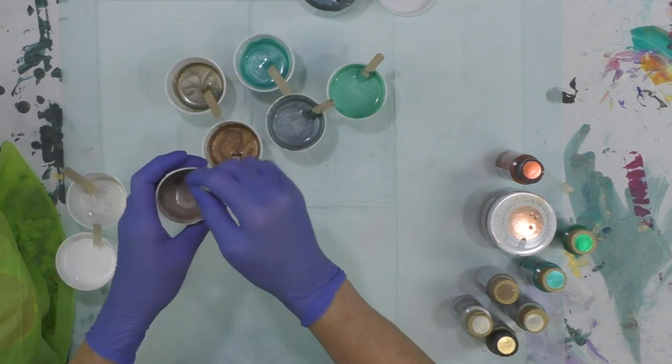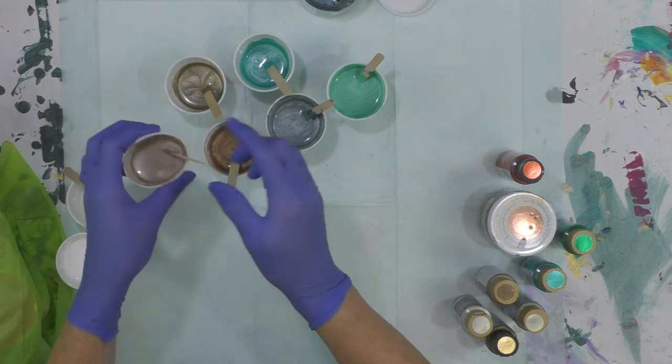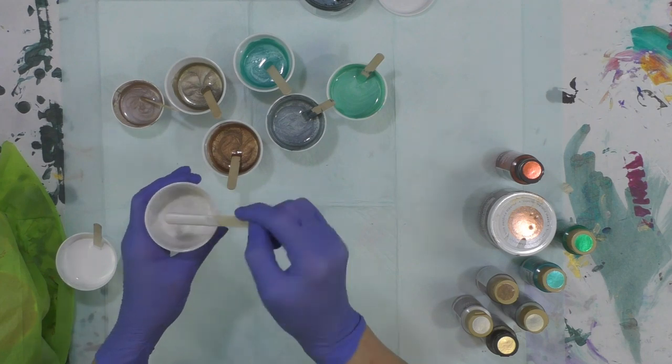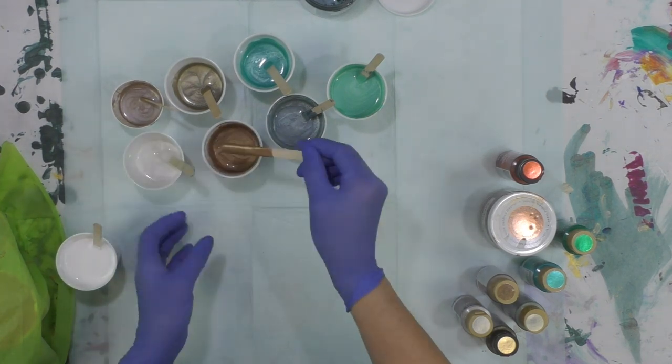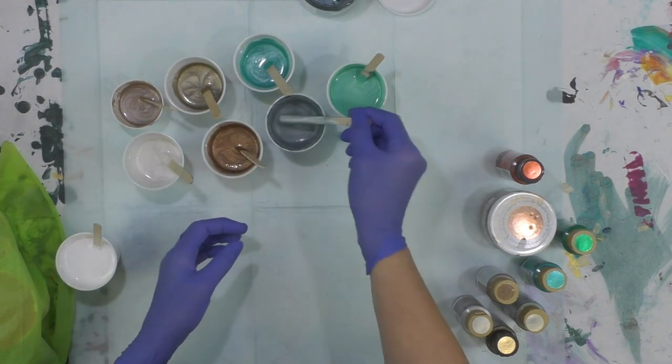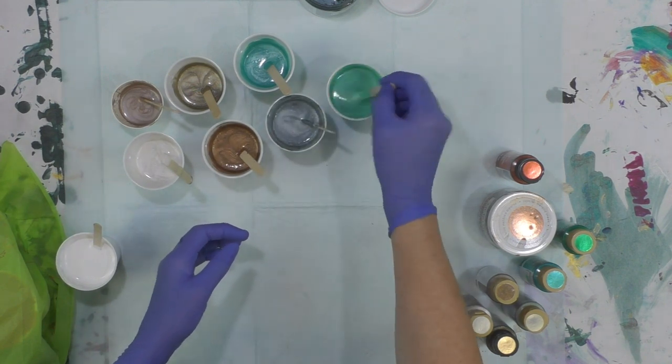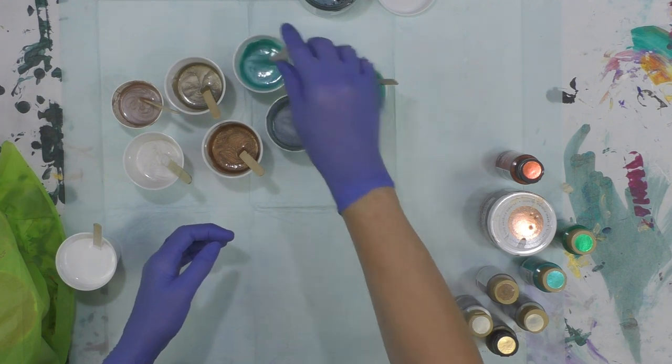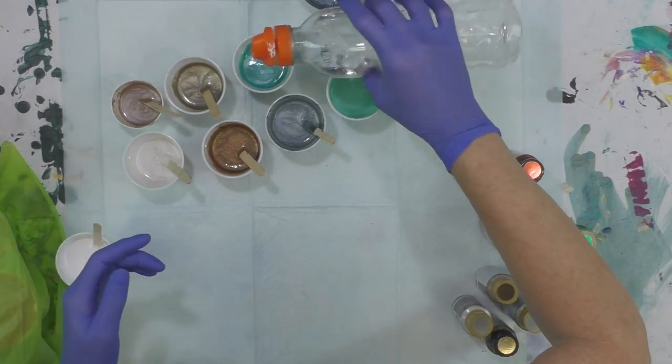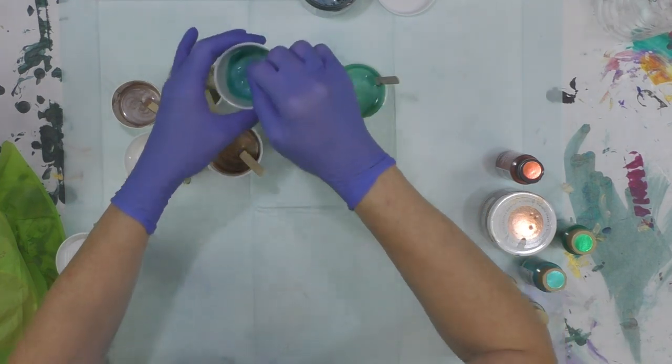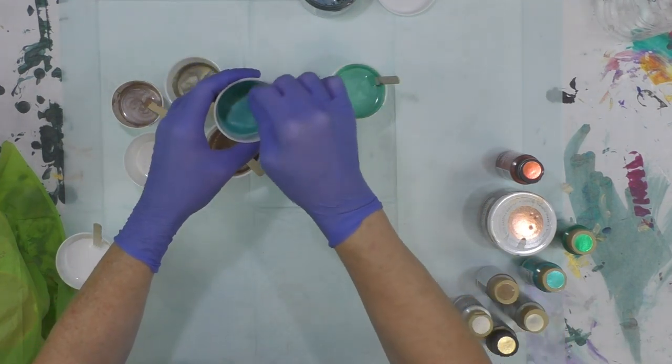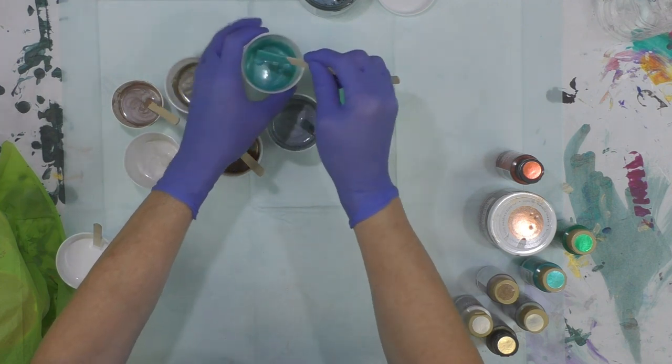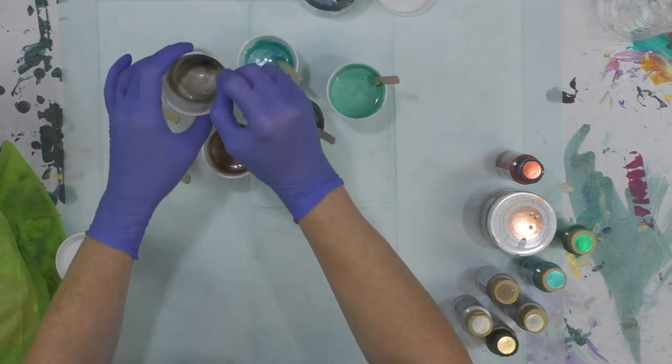I did add a considerable amount of water to each of these as well because with the Liquitex pouring medium it seems to be a little bit on the thicker side. I'm just checking my consistencies here to make sure everything is really the way I want it. I've got a bottle of water here. Some of these have thickened up since I mixed them and I just want to make sure they're totally fluid. I want them to be able to move around on the canvas pretty easily.